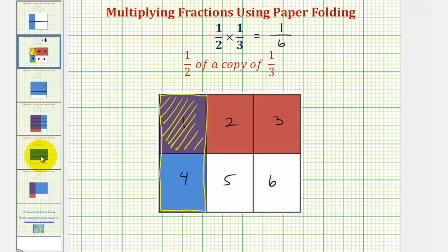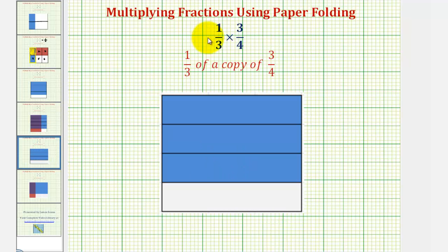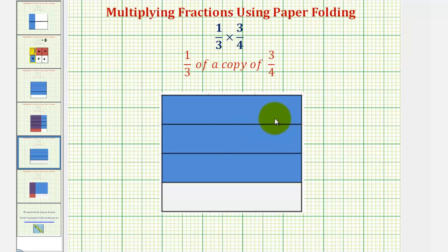Let's take a look at a second example. Here we have one-third times three-fourths, which means we want one-third of a copy of three-fourths. Notice how here, we folded the paper horizontally first into four equal partitions, and we shade three of those partitions to model three-fourths.